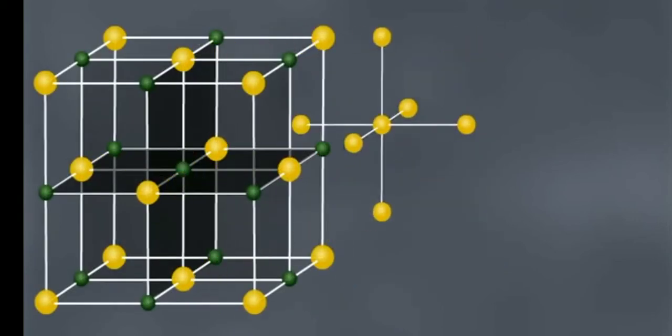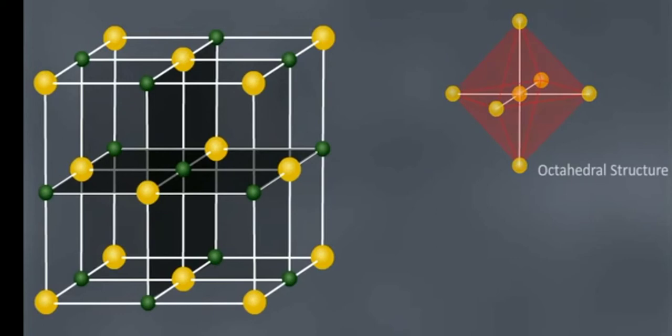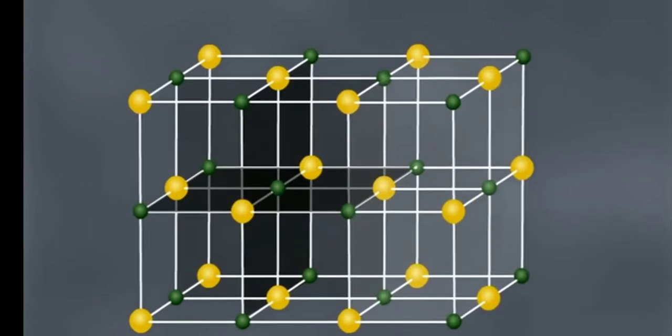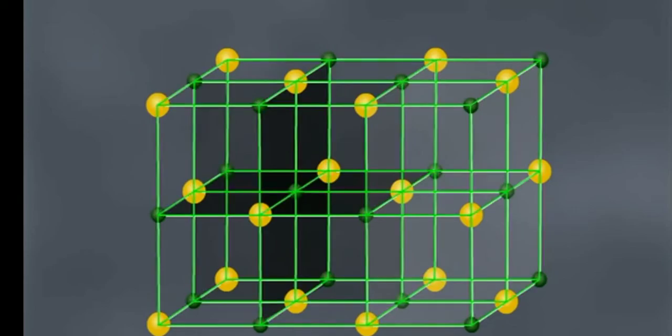In the arrangement of sodium chloride lattice, each Na+ ion is surrounded by six Cl- ions. Similarly, each Cl- ion is surrounded by six Na+ ions. This compound has equal number of oppositely charged ions, so it will have no charge.